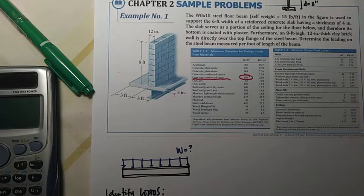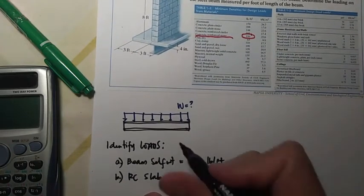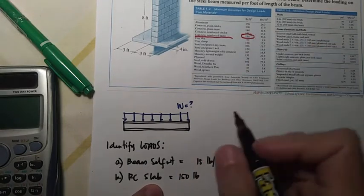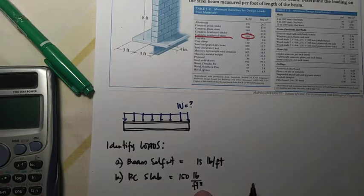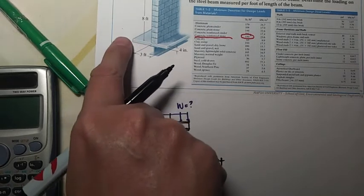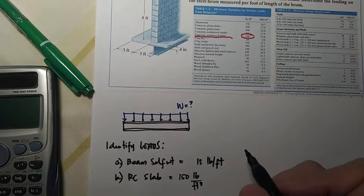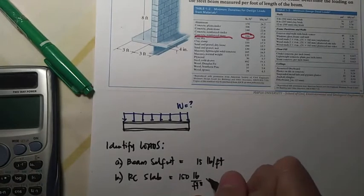Okay, so there we have the concrete, concrete reinforced stone, so we have 150. That is 150 pounds per cubic foot. To get the load coming from this 6 feet width slab, we're going to multiply it with the width.